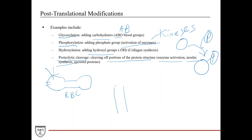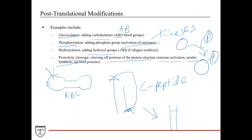Proteolytic cleavage is also part of the synthesis process, such as insulin synthesis. The initial insulin structure has two main sections plus a third section called the C-peptide. The C-peptide is cleaved off during synthesis to yield the final insulin product. C-peptide remains in the bloodstream and is actually measured to help with diagnosis of different diseases — we'll go into more detail in Unit 6 when we talk about diabetes.